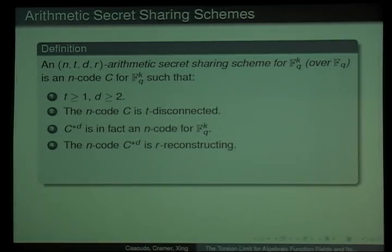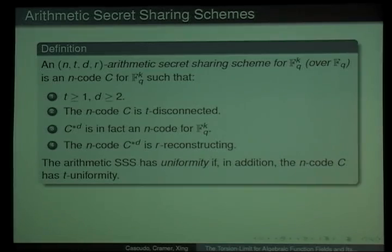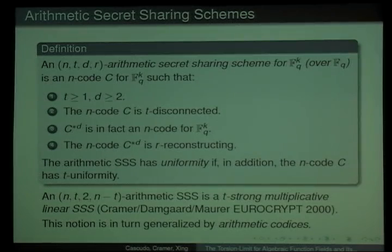This inspires the definition of arithmetic secret sharing scheme. An (n,t,d,r)-arithmetic secret sharing scheme, where t is at least one and d at least two, is an n-code that is t-disconnected and such that this power does satisfy the property that it is an n-code and is r-reconstructing. If the underlying code has t-uniformity, we say that the arithmetic scheme has uniformity.